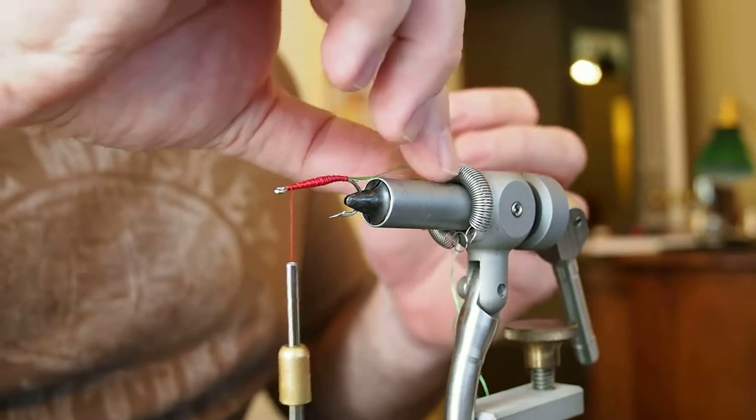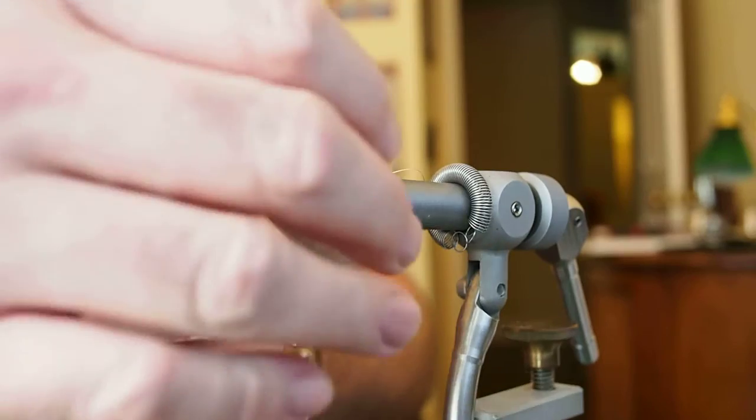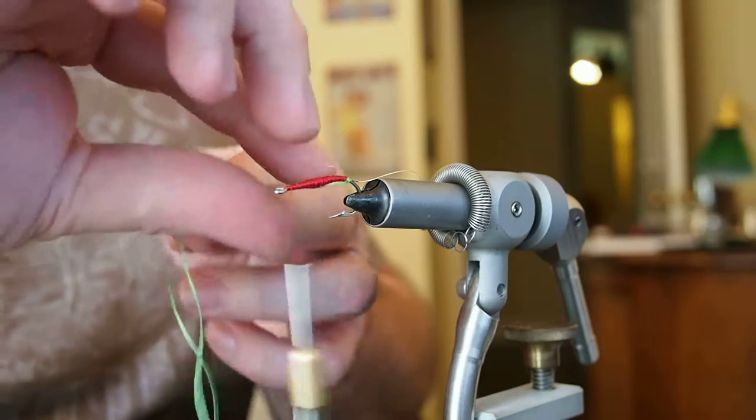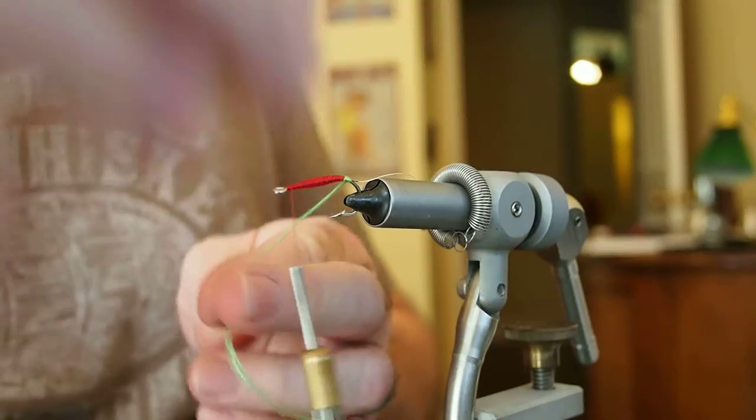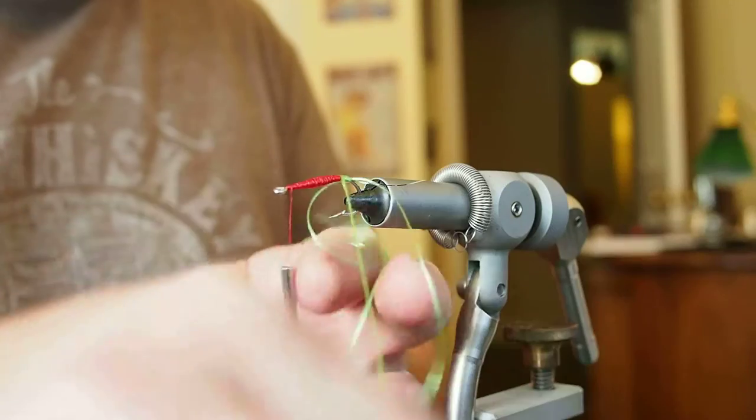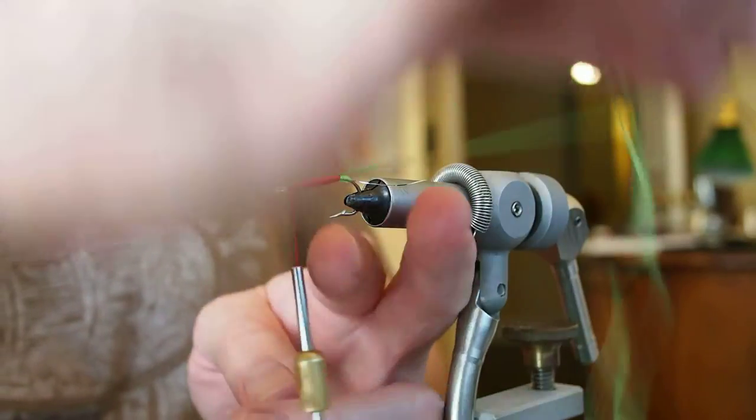Now I'm going to take my floss and start to wrap that. You have to be careful with the floss because if you snag that hook tip it'll start to fray, particularly this floss. I don't think this is very high-end floss. But I'm going to just start to wrap that around the body. And touching wraps.